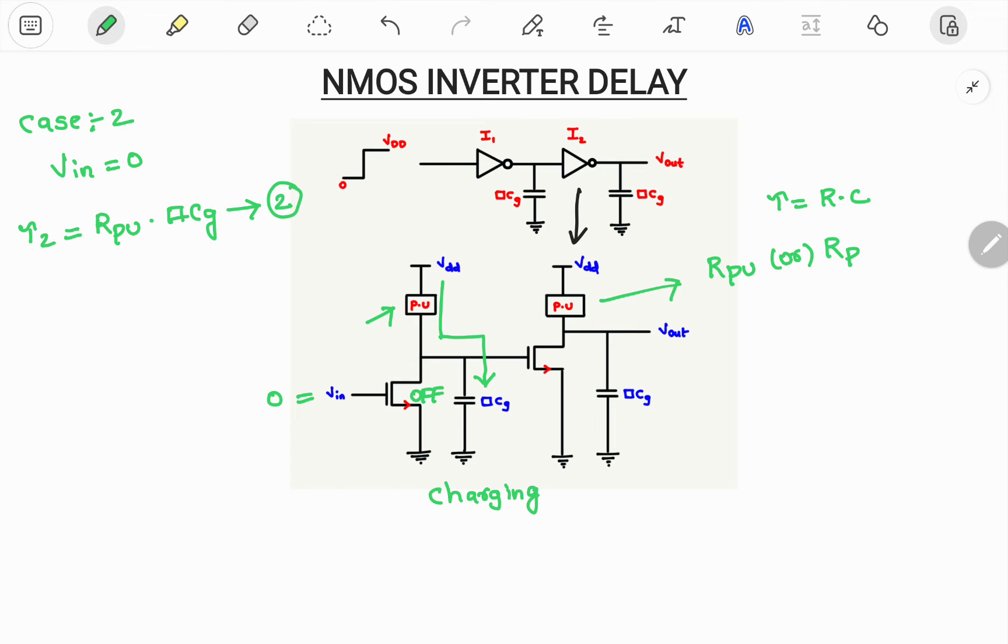So we got two equations, that is we got tau 1 as R pull down into CG which is number 1, and tau 2 is R pull up into CG. If I want overall delay, it will be total delay equals tau 1 plus tau 2.